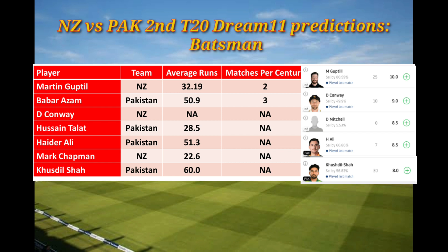For the batsmen, you can see the average runs scored in T20s, and in the right corner you can see the last match score for each player. Conway has 10 points and Guptill has 25 points in the last T20, while Shah has scored 30 Dream11 points, which is the highest in the batsmen's list.